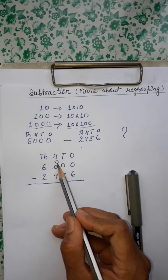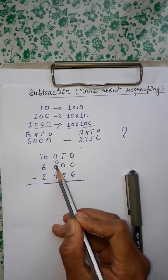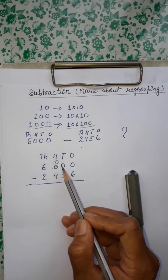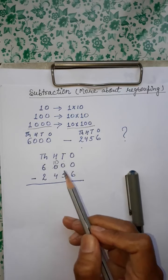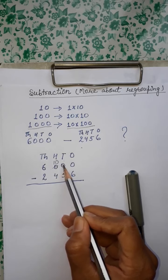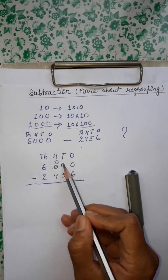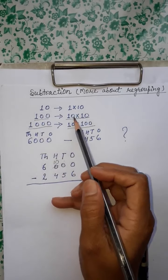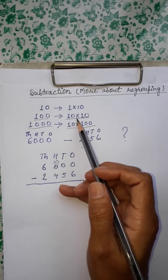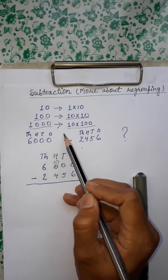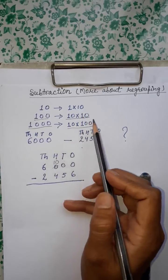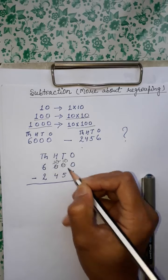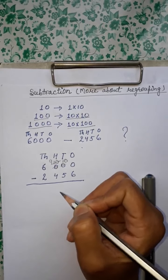Jab 10 hundreds humne le liya — iske paas 0 se 10 ho gaya. Tab 10 hundreds ne socha ki chalo hum ab 10s ke place ko de dete hain. Toh next step mein hum kya karenge? Borrow 100 and change it into 10 tens. 10s kya karega? 100 se toh 100 hi le sakta hai. 100 ke paas 100 hi hoga — 100 se kam nahi hoga. Toh wo 100 lega. Ab 100 ko hum 10s ke form mein kaise break karenge? 100 ko hum 10s ke form mein break karne ke liye 10 into 10 kar sakte hain — that means 10 times 10s. So we borrow 100 and change it into 10 tens. Again isne 10 le liya — toh 100 bhai sahab ne jo 10s ko diya, toh khud 100 bhai sahab ke paas kitna ho gaya? 9.